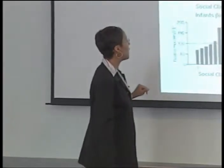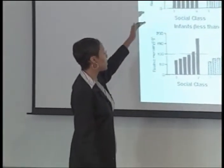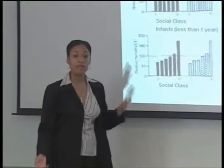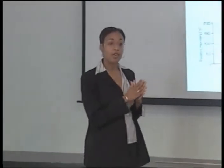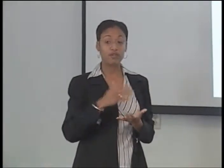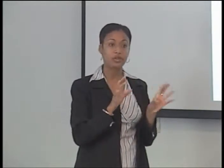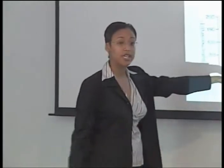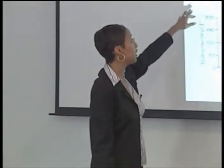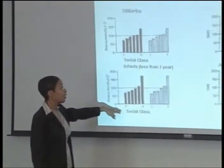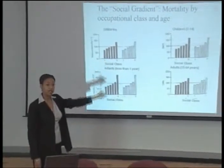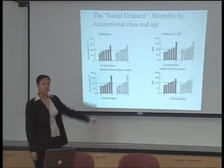This gradient also persists across the life course. One of the concepts from our class objectives is life course epidemiology — the study of the distribution of risk factors across phases of life, and how health and social factors are distributed over time. What we see is that the gradient persists across phases of life: it is clear for stillbirths, for infant deaths, for deaths of children between the ages of 1 and 14, and for adults between the ages of 15 and 64.